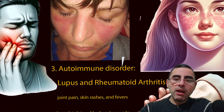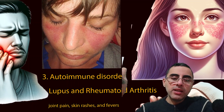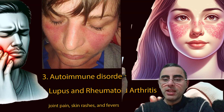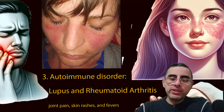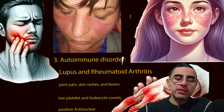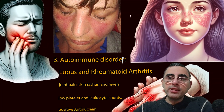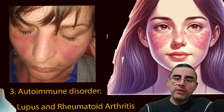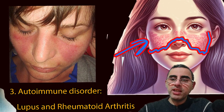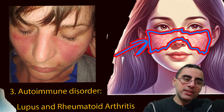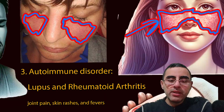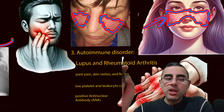The third most common cause is autoimmune disease. Lupus is an autoimmune disease which damages joints, skin, and different organs, and it can cause enlargement of lymph nodes. It can also cause low platelet count and low leukocyte count. There is a characteristic butterfly rash on the skin — it is not always present, but it is characteristic of lupus when it is.